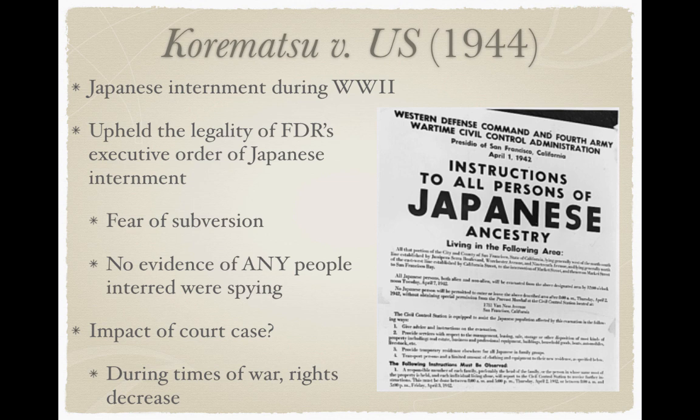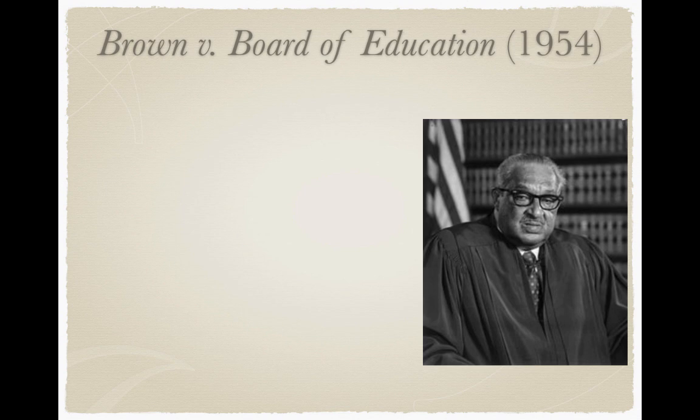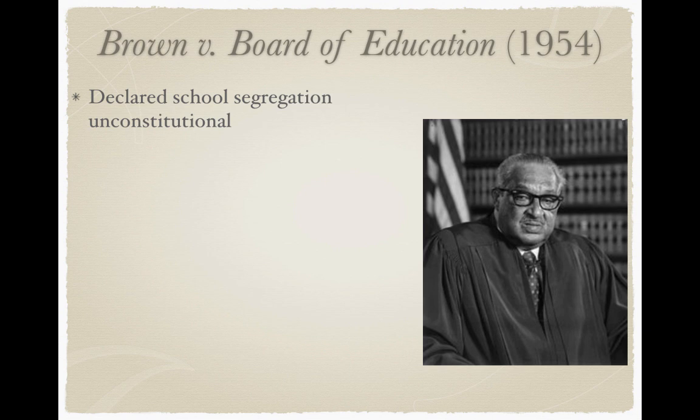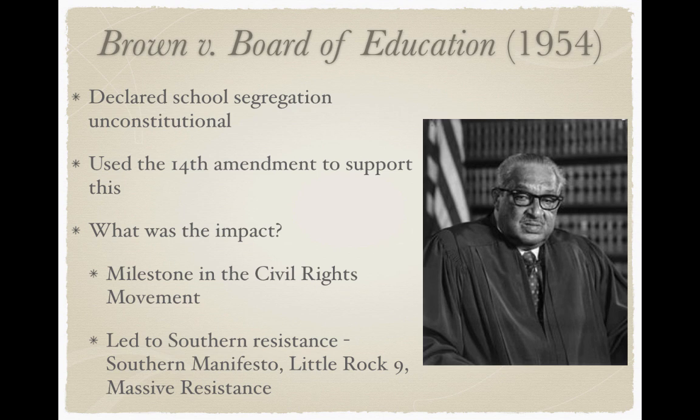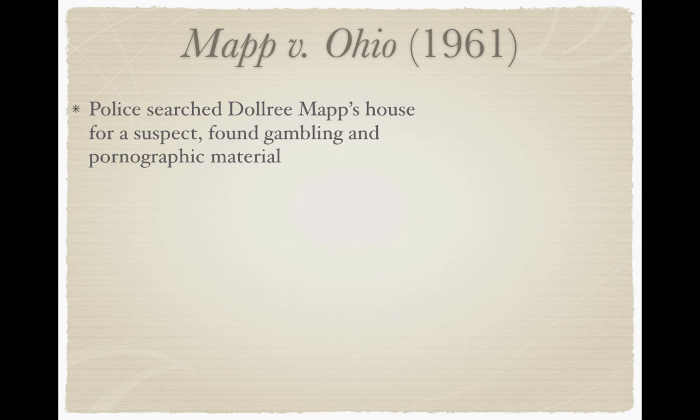Brown v. Board of Education from 1954 — one of the largest, most significant court cases in U.S. history — was argued by future Justice Thurgood Marshall. The Supreme Court declared school segregation unconstitutional, using the 14th Amendment's equal protection clause. The impact was a milestone in the civil rights movement. This led to southern resistance such as the Southern Manifesto, the Little Rock Nine in Arkansas, and massive resistance — the shutting down of schools rather than desegregating.